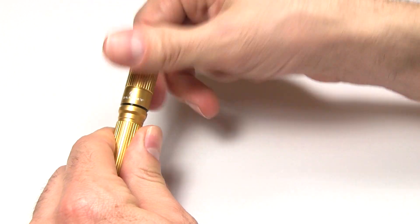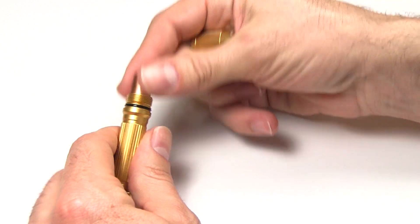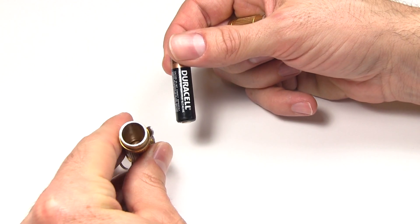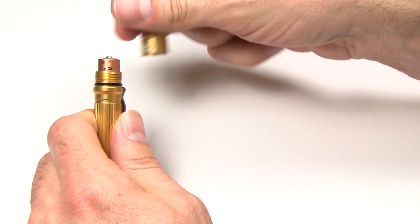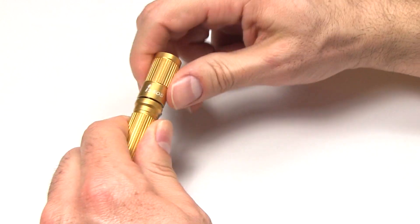The head here unscrews, this is where the battery goes, AAA battery which it comes with, which is very nice. Down on the inside there, there is a little spring. In goes the battery and back on goes the head.